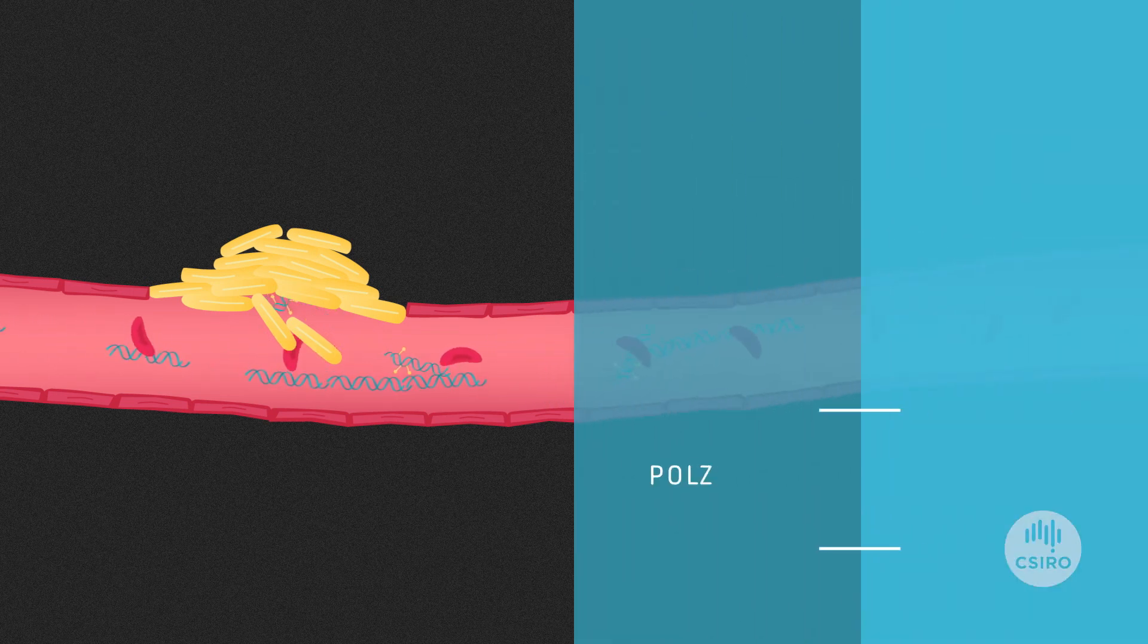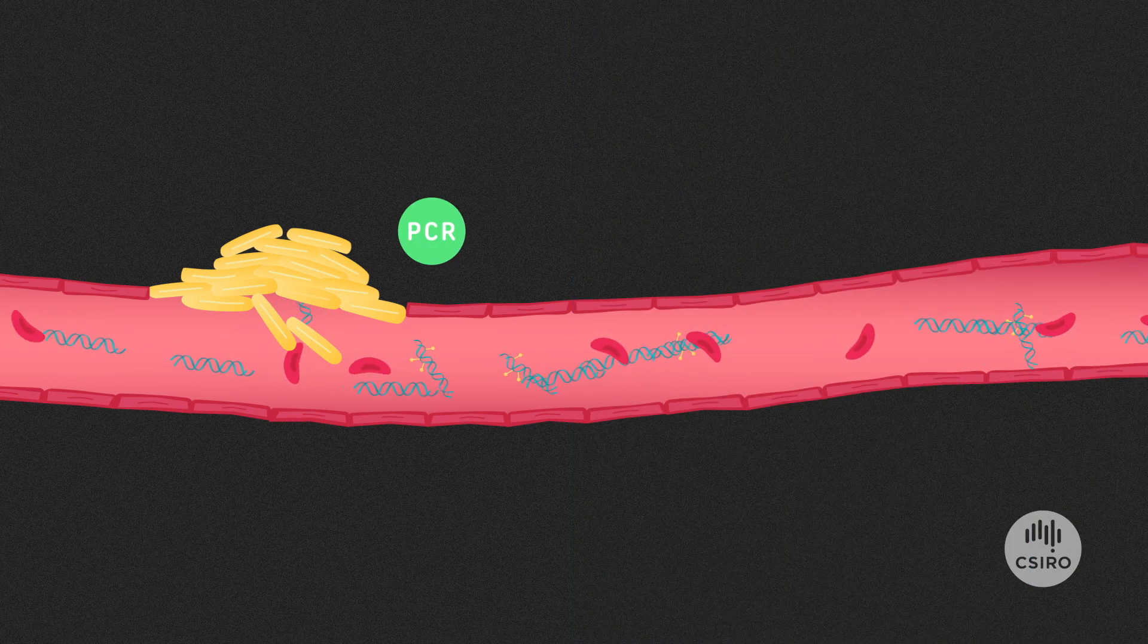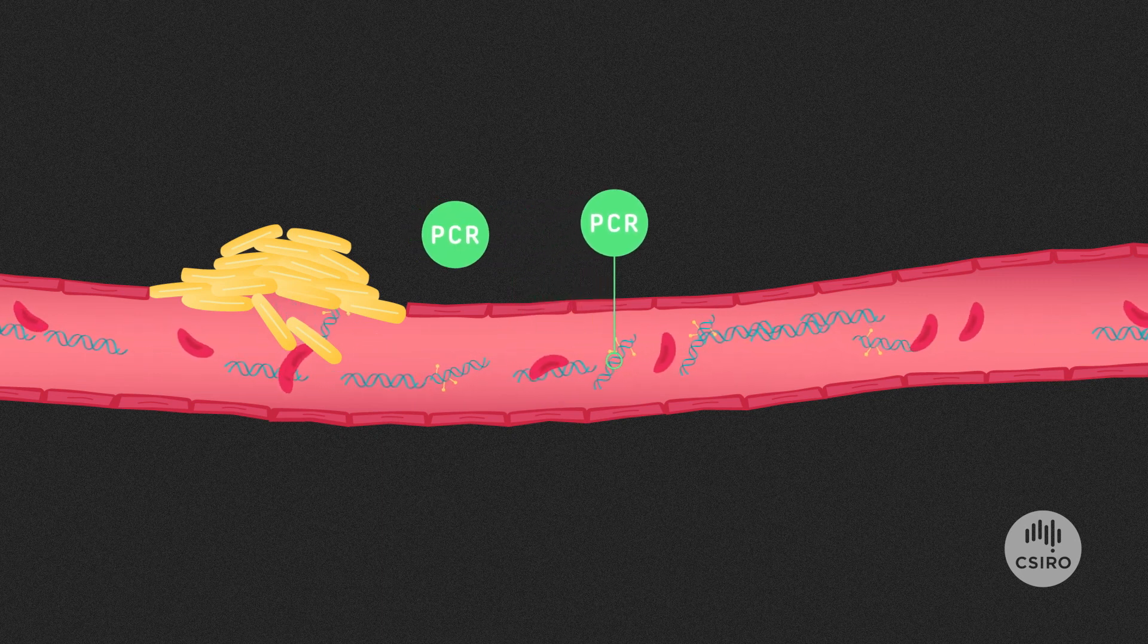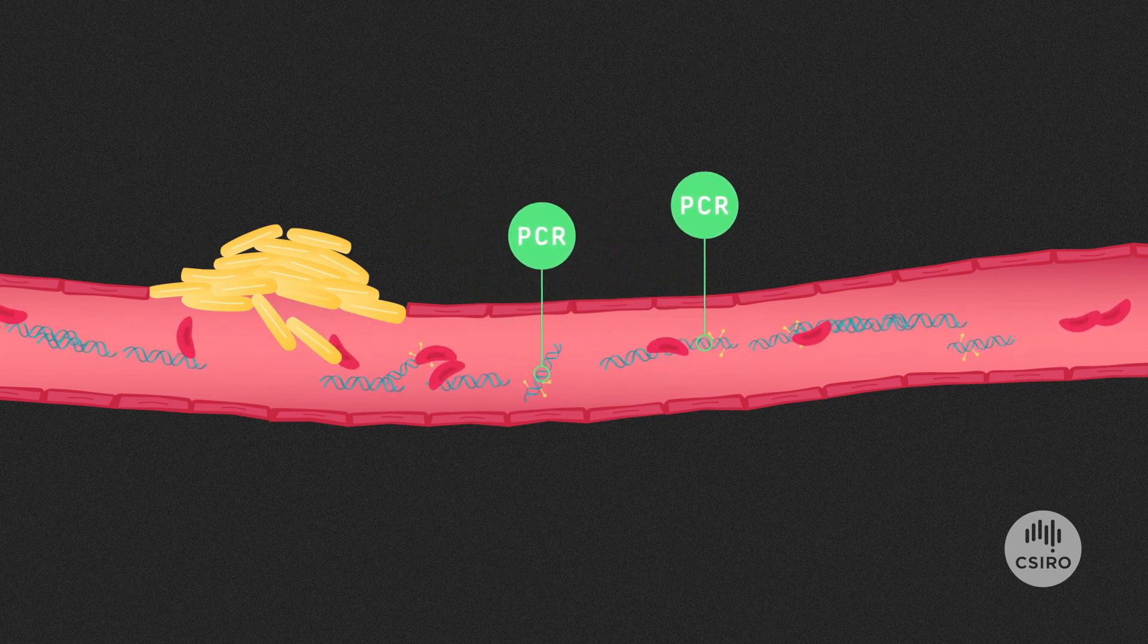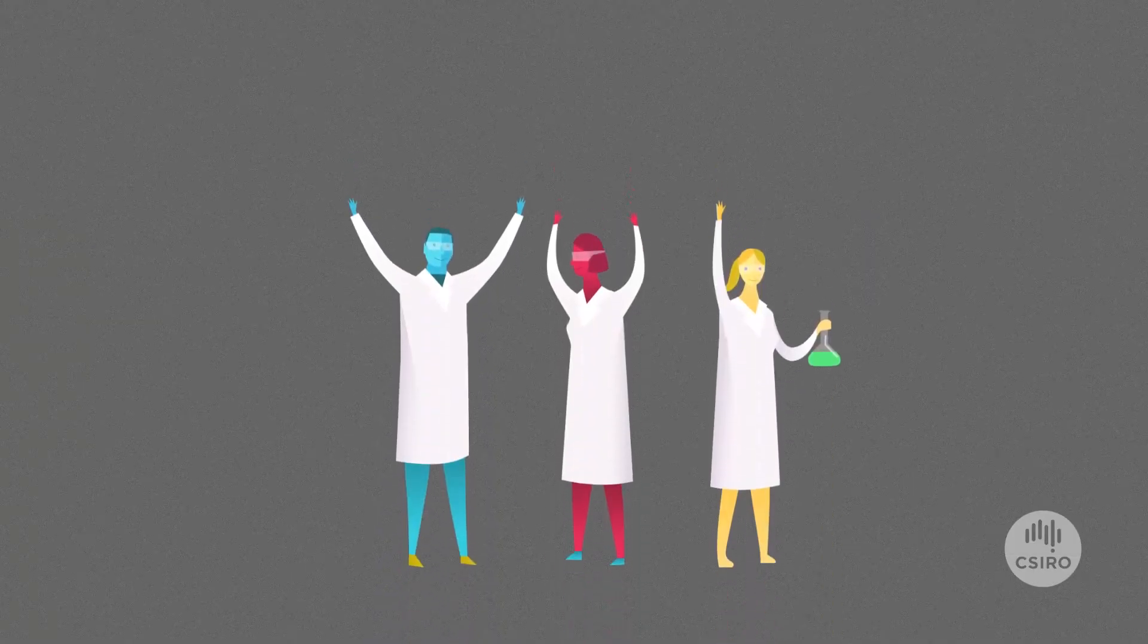They applied a process called polymerase chain reaction, or PCR, a way of investigating DNA. With the PCR, they found the methylated fragments of the two key genes they'd identified earlier could be detected in the blood of patients with cancer in their system. They had found a marker to look for.